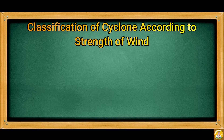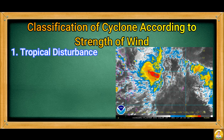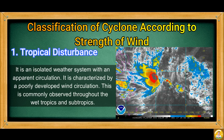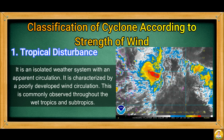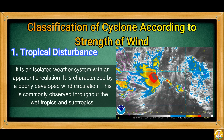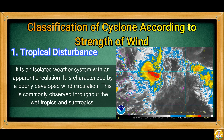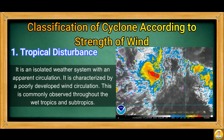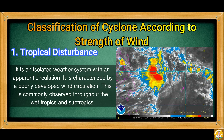We come now to the classification of cyclones according to strength of wind. First, we have tropical disturbance. It is an isolated weather system with an apparent circulation, characterized by a poorly developed wind circulation. This is commonly observed throughout the wet tropics and subtropics.